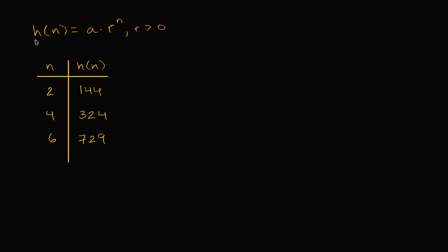Let's say that we have an exponential function h of n, and since it's an exponential function, it's going to be the form a times r to the n, where a is our initial value and r is our common ratio, and we're going to assume that r is greater than zero. And they've given us some information on h of n. We know that when n is equal to 2, h of 2 is 144, that h of 4 is 324, that h of 6 is 729. So based on the information here, let's see if we can actually figure out what a and r are going to be.